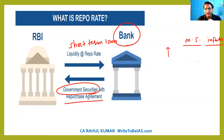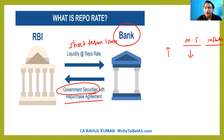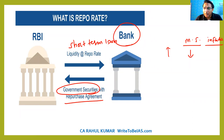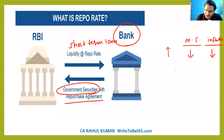Money supply will basically decrease. Because if the repo rate is increased, that means commercial banks will also increase the rate of interest at which they give loans to the public. Because of that, the public will demand less money from the banks. Money supply will come down and inflation will also come down. Vice versa — if the repo rate is decreasing, money supply will increase and inflation will also increase.